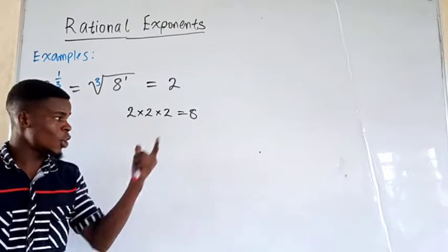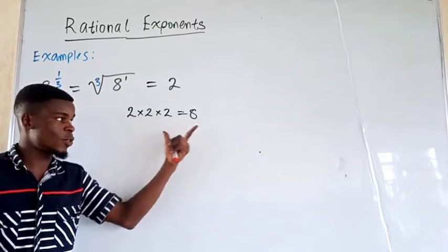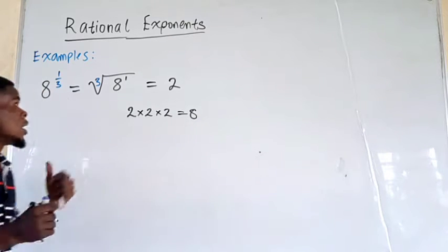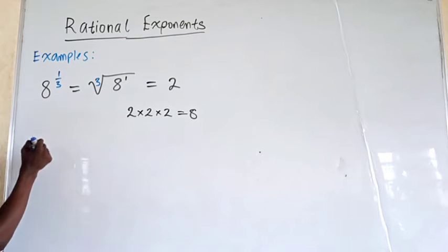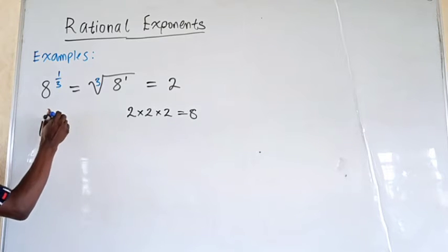So, which number will multiply itself 3 times to give you 8? Now, let's talk about another one. We have 16 raised to the power of 1 over 4.